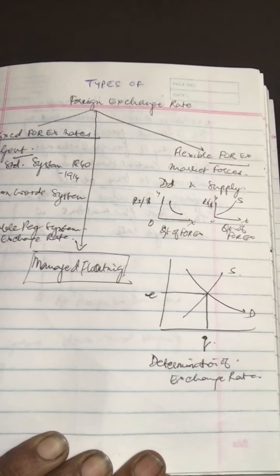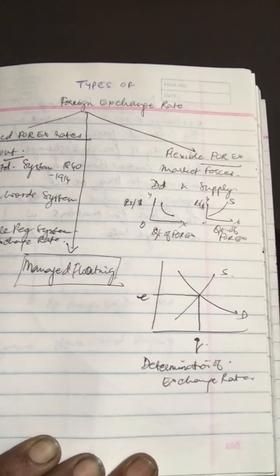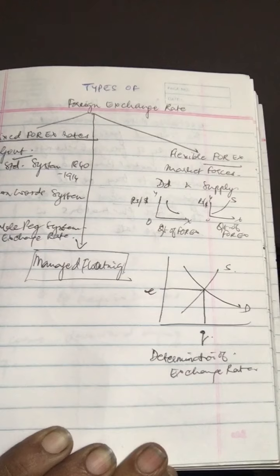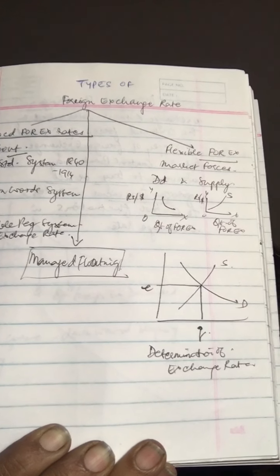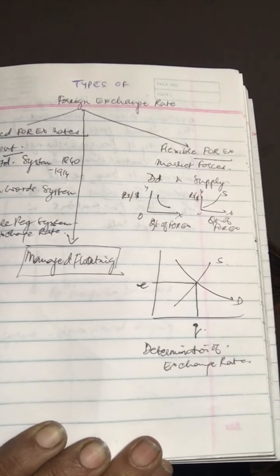Exchange rates were determined by its worth in terms of gold. Sometimes this was referred to as mint parity value of exchange.